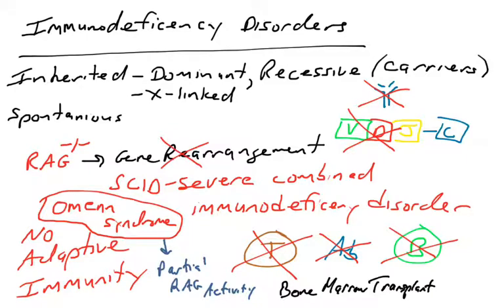So these are severe immunodeficiency disorders. They can be treated using bone marrow transplants to basically replace the bone marrow and give an individual cells that will in fact have the RAG genes in them. So that's one immunodeficiency disorder.